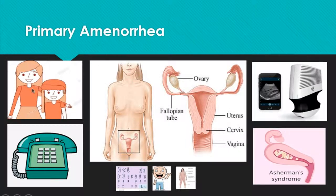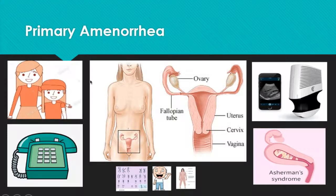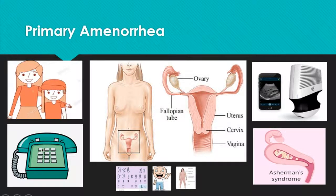Primary amenorrhea: the mom brings in the daughter, concerned because her daughter has not started menstruating. You first need to decide — is this normal or abnormal? The current guidelines are that if a girl has secondary sexual characteristics like breast development and pubic hair, up until the age of 15, it is normal for her not to have a period. If she's older than 15, even with secondary sexual characteristics, that's abnormal. A girl who is 13 years old without any secondary sexual characteristics is also abnormal. I have here a picture of a telephone — if you need to dial emergency services in Pakistan, apparently the number is 15.